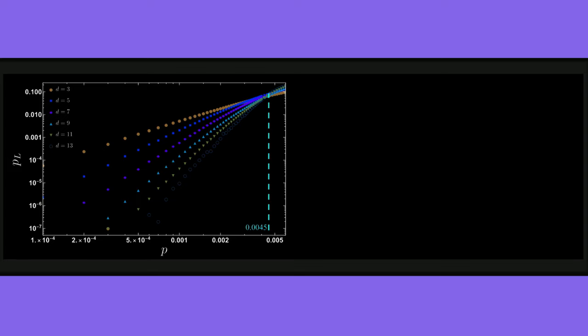For the surface code-like part of the heavy hex code, which corrects for bit flips, that's a thresholded code, which means we get an advantage as long as we're below a certain error rate. In this case, that's 0.0045 or 0.45 percent. Here if we look at a depth three heavy hex code, we can see what the logical error rate is and we can see that that goes down as a function of physical error rates. Now what happens is if we use deeper and deeper depth error correction codes, we can push that logical rate down further, which means we have resources that we can use in terms of physical qubits to reduce the logical error rate of our logical qubits.